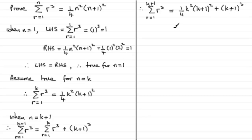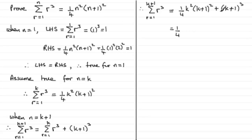At this point I like to look ahead and see what we're aiming for. Since we've got to show the original result with n replaced by k plus 1, we would expect the answer to be a quarter times k plus 1, all squared, times k plus 2, all squared. So I need a quarter out the front, and I can see that k plus 1 all squared features in both terms, so I'll factor that out.